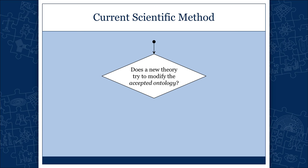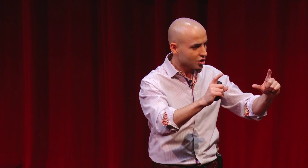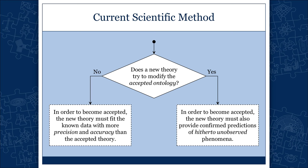Here's a flowchart. The question is: does a new theory try to modify the accepted ontology? If it does not, then mere precision and accuracy are sufficient — just do as many experiments as you can, make sure the predictions fit the available data, and your theory will become accepted. Just like in the case of the law of free fall.